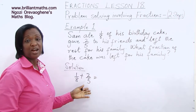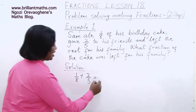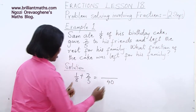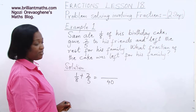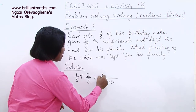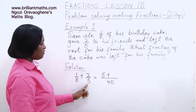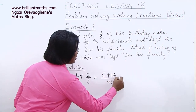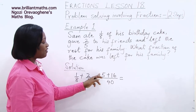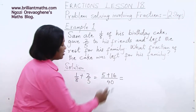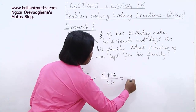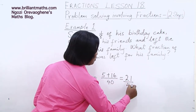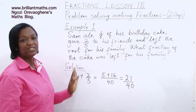So the first step is to find the sum of what Sam ate and what he gave to his friends: one-eighth plus two-fifths. The LCM of 8 and 5 is 40. Eight into 40 is 5; five times one is 5. Five into 40 is 8; eight times two is 16. We add 5 and 16 together, which gives us 21 over 40. That's the first step — the fraction of cake that Sam and his friends ate.